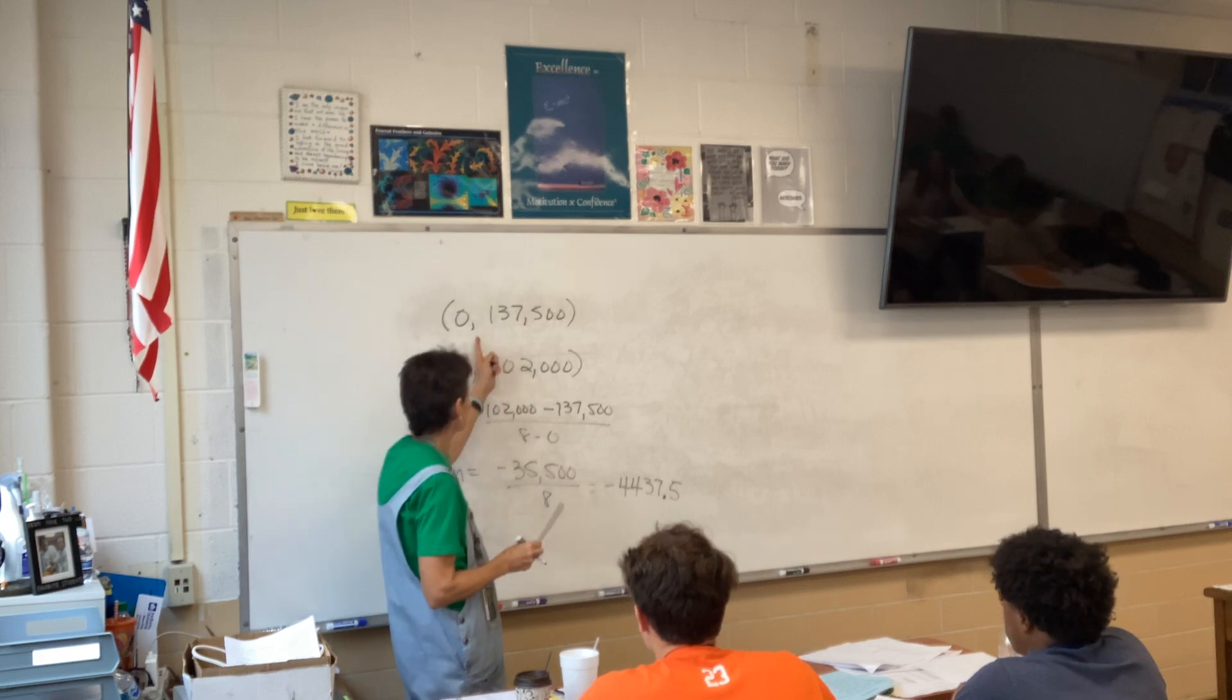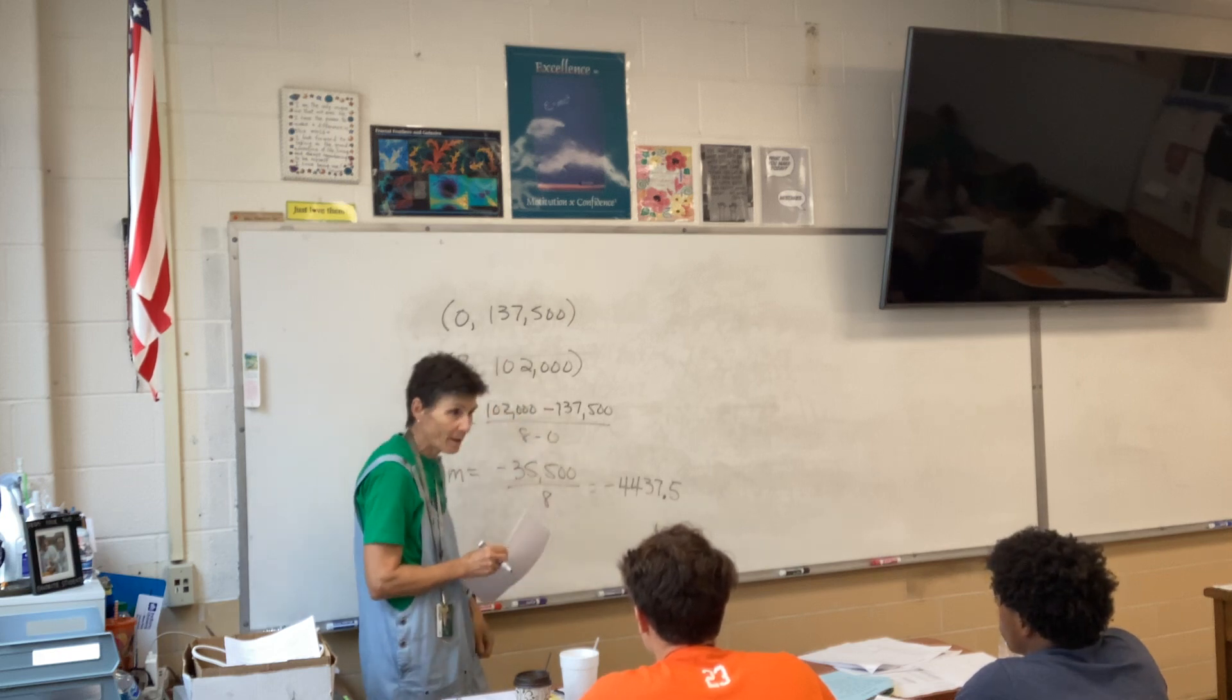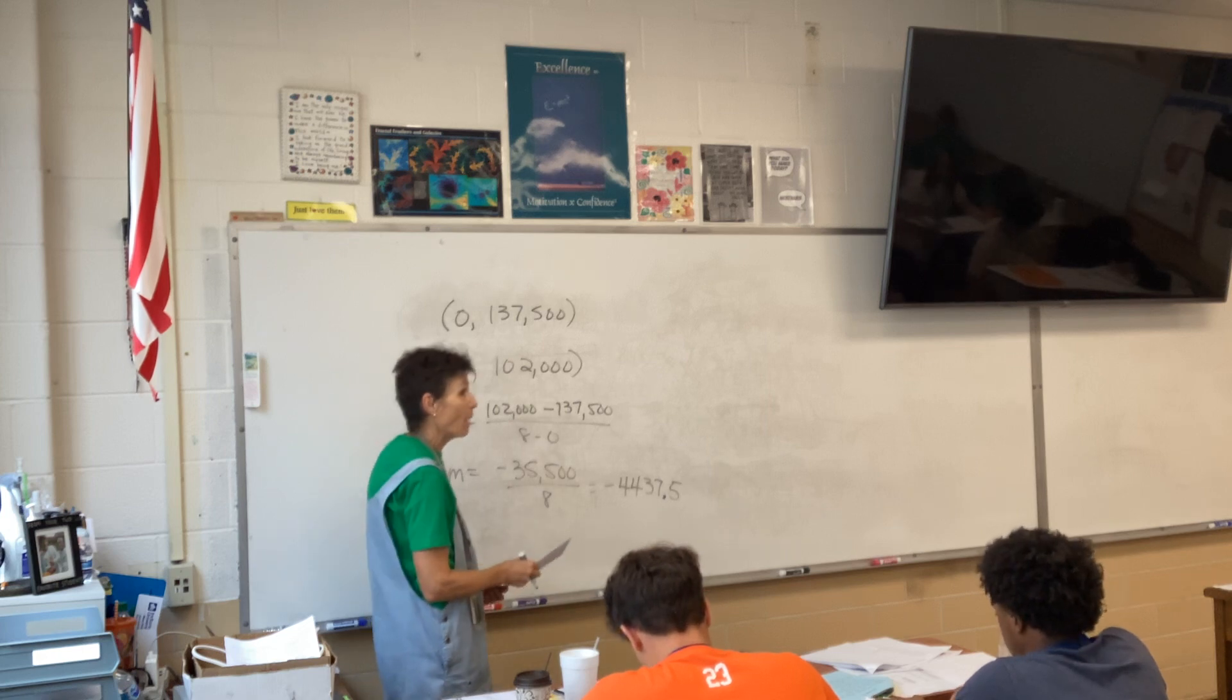If you have wacky weird numbers like this, you're going to be allowed to use your calculator. Don't panic. But if they're numbers like 0, 10, 8, 13, then you're going to do it by hand. All right. So now what?